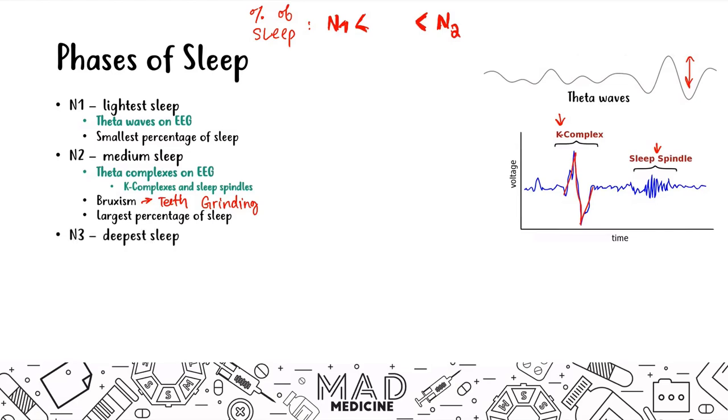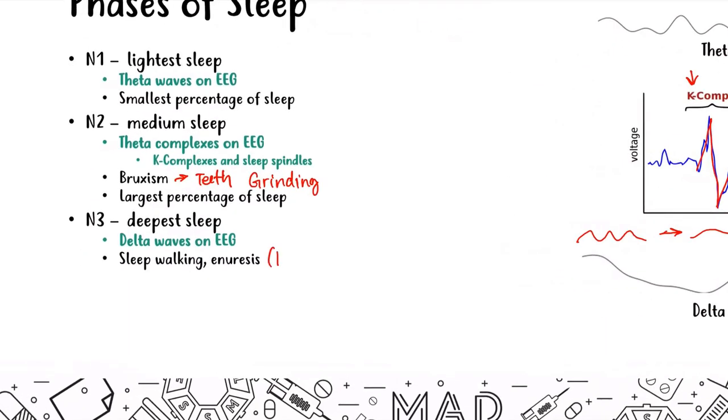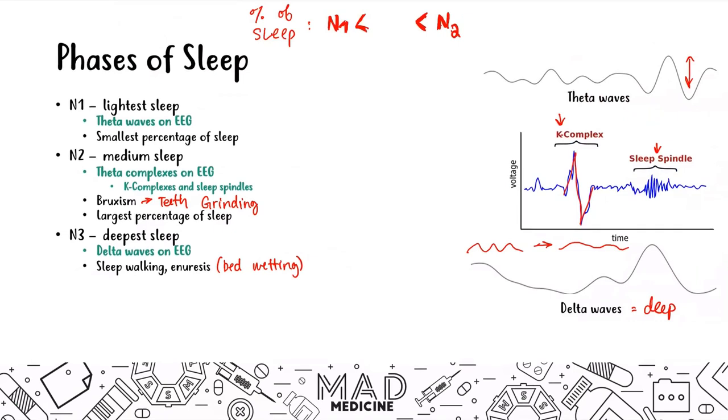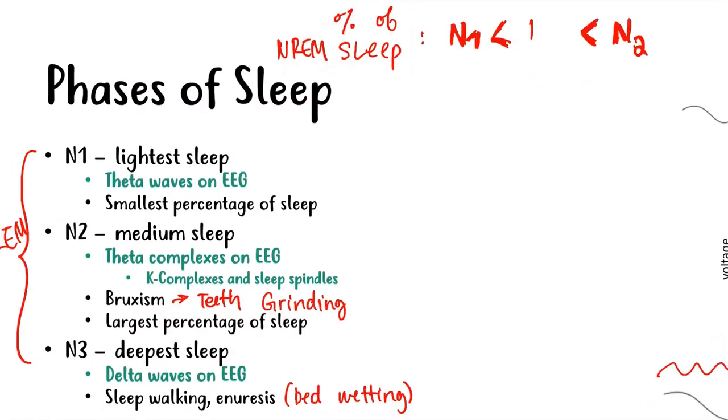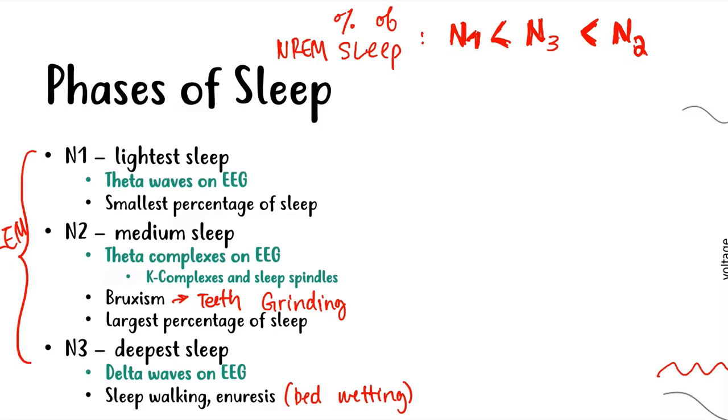After N2, you go into N3 sleep. This is your deepest sleep with delta waves on the EEG. I like to think about delta waves as very deep waves. The waves are not very consistent, spread out. You also are going to have sleepwalking and enuresis or bedwetting occurring here. These are your three phases of non-REM sleep. The most time spent while you're asleep is in N2 sleep, the least time in N1, and N3 is in the middle.